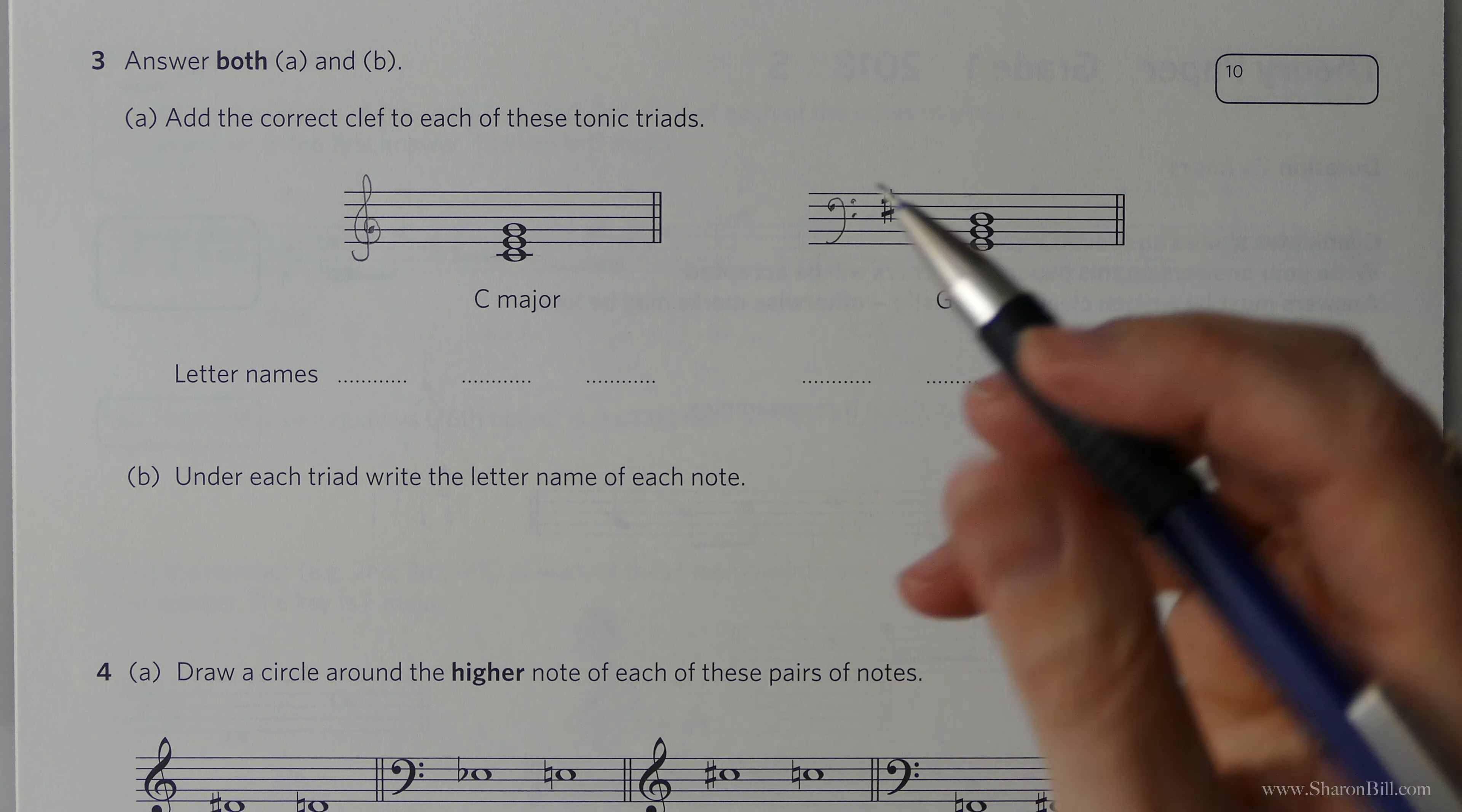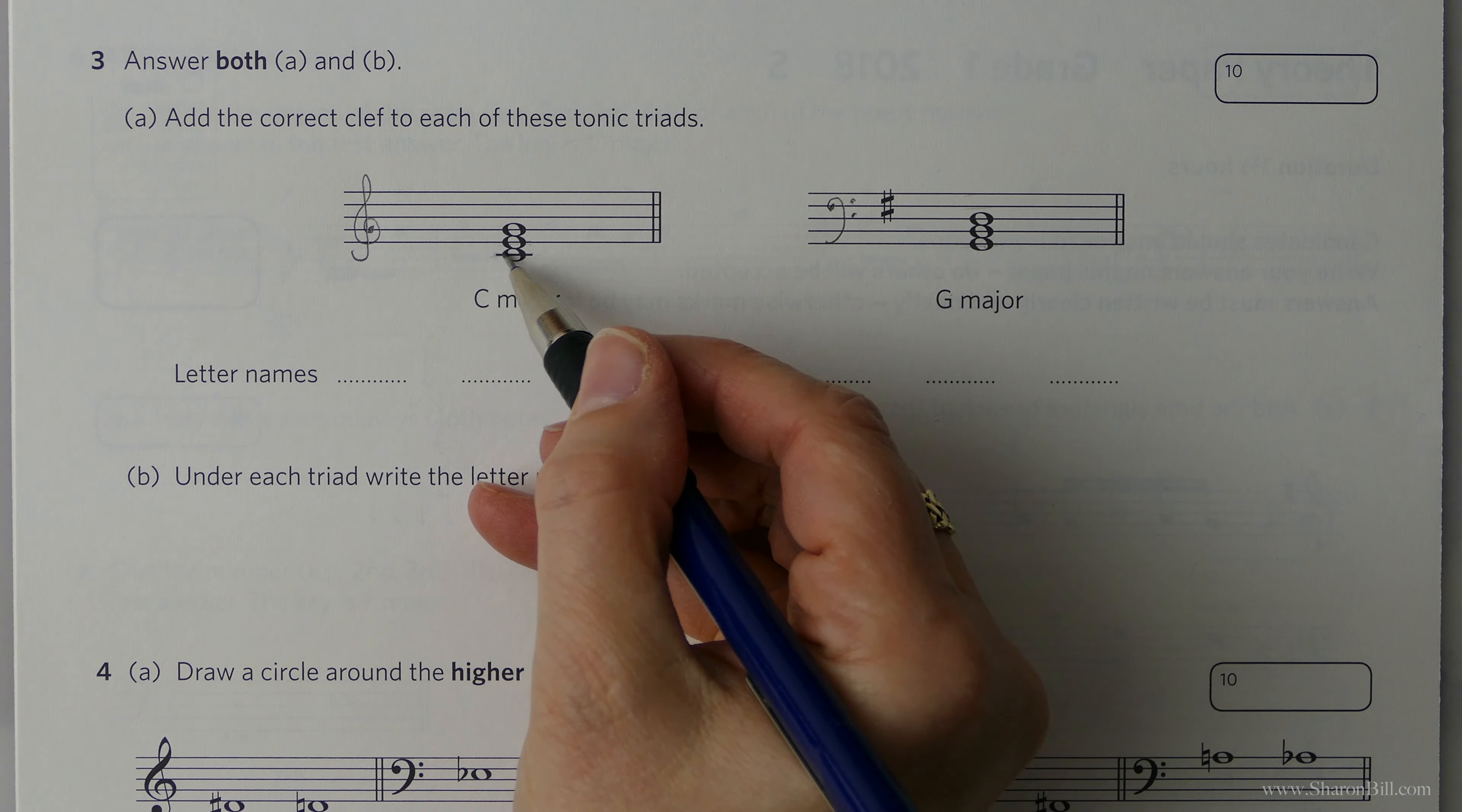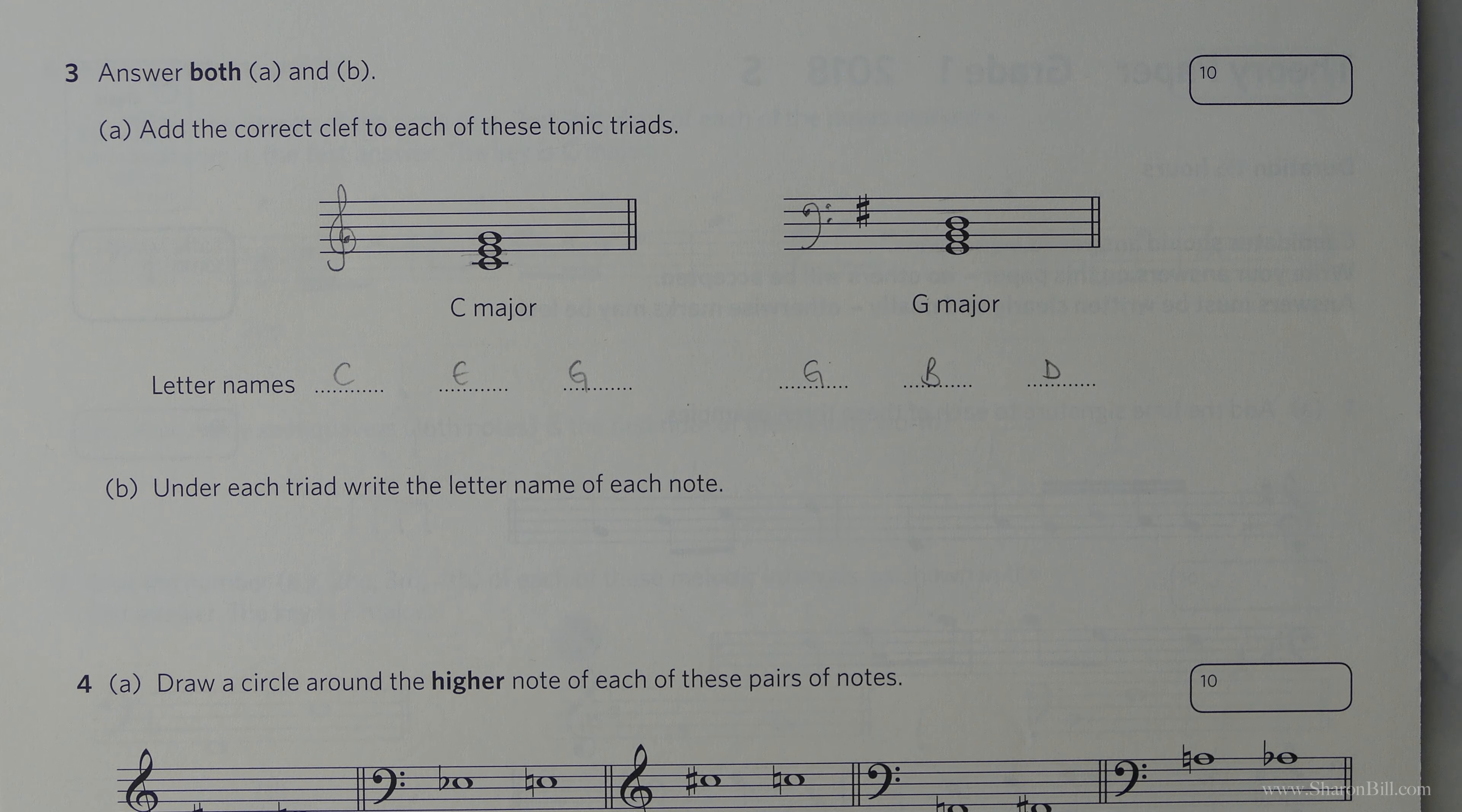And we've already answered the second part of the question where we're asked to write the letter names of each of the notes of the triad. So C major should be C, E, G. If you just want to visualize that on a keyboard, it's easier to see. The first, the third and the fifth, C, E, G. And in the treble clef, we have middle C, D, E, F, G. So double check that. And of course, for the bass clef, it starts on a G, building up first, third, fifth, G, B, D, which is what we've got here. So we've kind of already done that thinking. So there, that's job done.